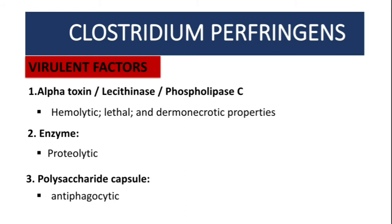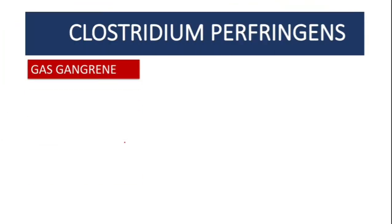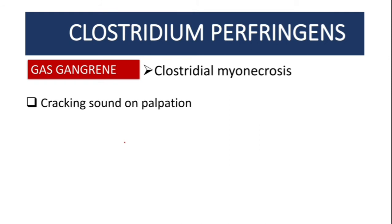The enzymes have proteolytic properties, and the polysaccharide capsule is important to help the bacteria evade phagocytosis — it has antiphagocytic properties. Now let's talk about the main conditions caused by Clostridium perfringens.